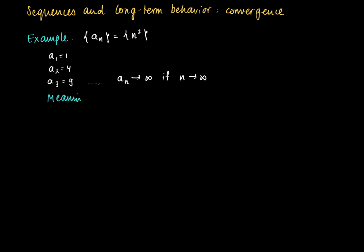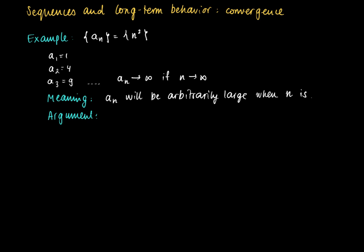What do we mean by that? We try to make this statement explicit. What we mean is that the elements a_n will be arbitrarily large when n is large — so when n is large, a_n will be large as well. By choosing n large enough, a_n will exceed any real number. So the argument is that in order to show that a_n goes to infinity, we show that a_n exceeds any number m.